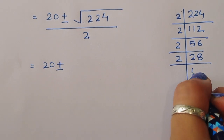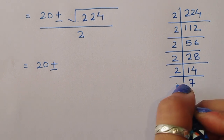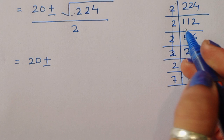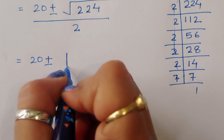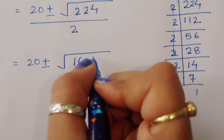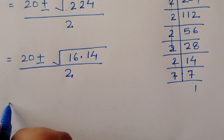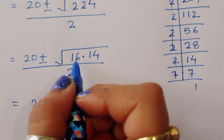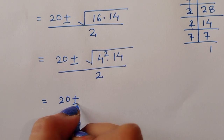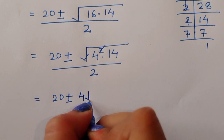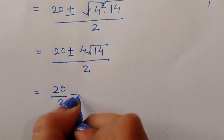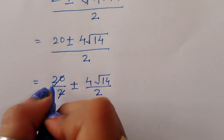Factoring 224: two 2s are 4, three 2s are 8, four 2s are 16, and 7 times 2 is 14, so 224 equals 16 times 14. Therefore the square root of 224 equals the square root of 16 times 14, which equals 4 times the square root of 14. So the expression becomes 20 plus or minus 4 root 14, divided by 2.